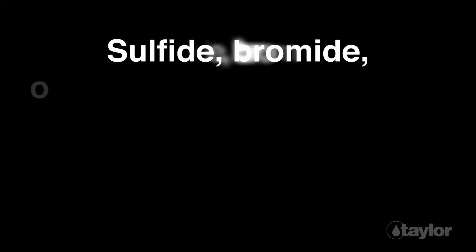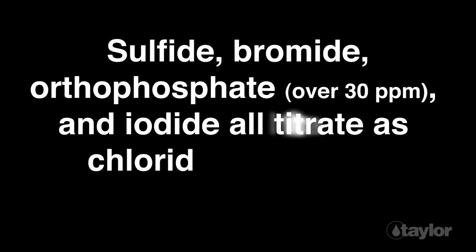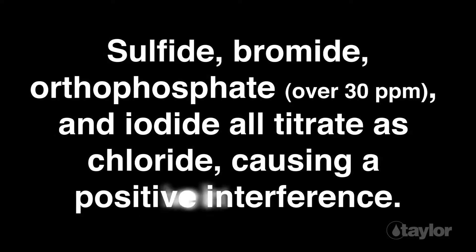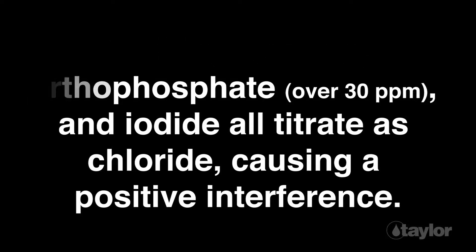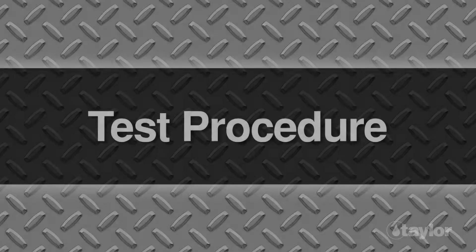Sulfide, bromide, orthophosphate over 30 parts per million, and iodide all titrate as chloride, causing a positive interference. To prevent this from occurring, test for the suspected interfering agent, dilute the sample with DI water as necessary, and then retest.